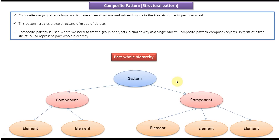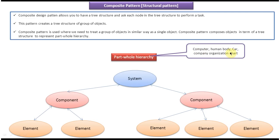If you want to implement this kind of tree structure in Java, then the composite design pattern is a good choice. Using composite design pattern you can make this kind of tree structure which composes component objects, system objects, element objects, etc. These are real-time examples of part-whole hierarchy: computer, human body, car, company organization chart, etc.